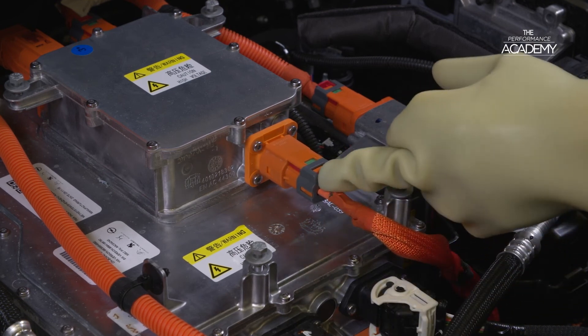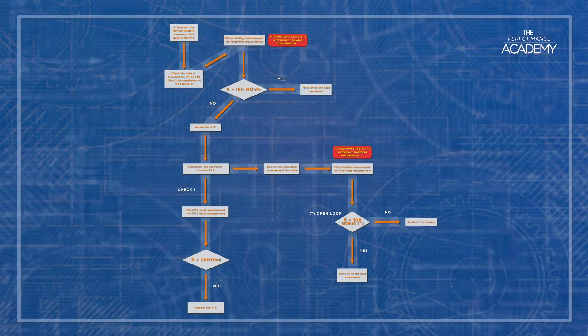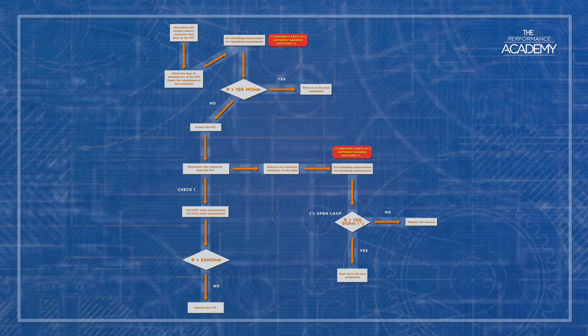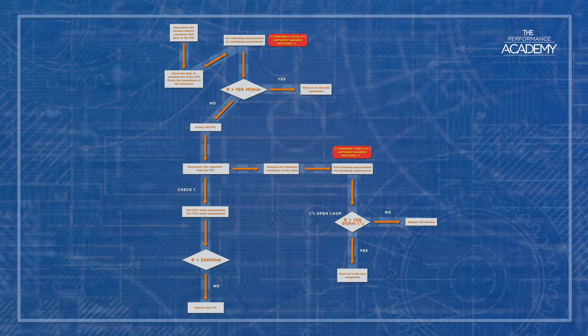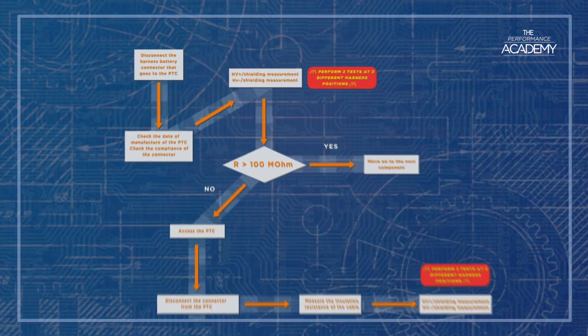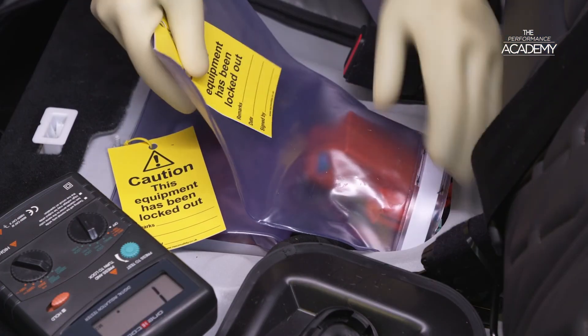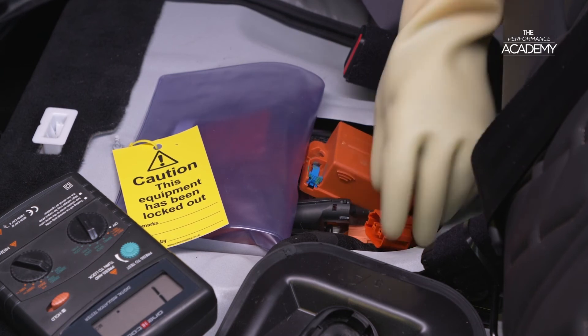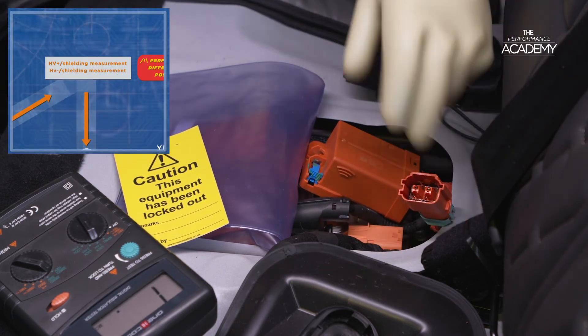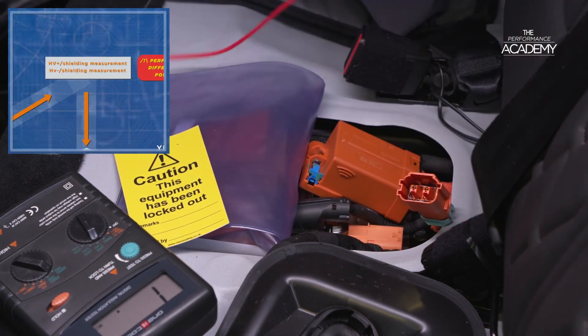When completed the powering down procedure for a PHEV, we're now ready to carry out a test on the PTC heater as instructed. These test instructions are in the form of a flow chart. After powering down the vehicle driveline, the insulation test for the PTC heater starts at the already disconnected high voltage supply cable at the traction battery. Using the PTC heater connection, it asks for the following checks to be carried out and the results to be recorded.